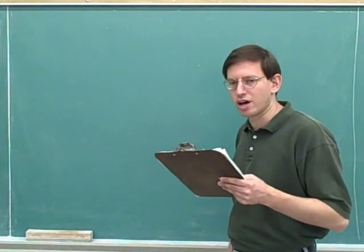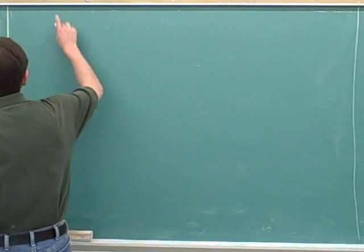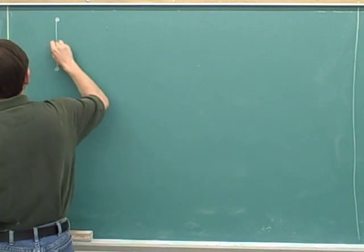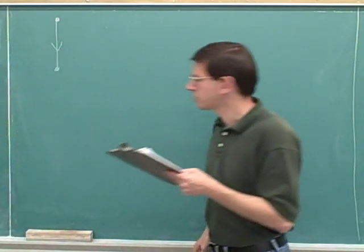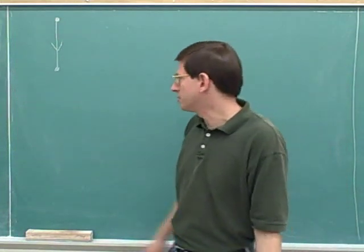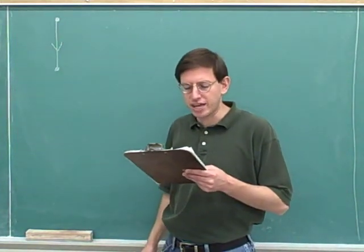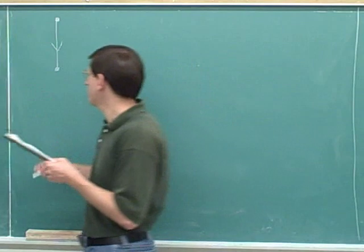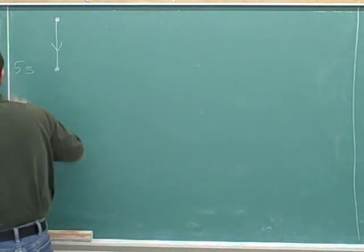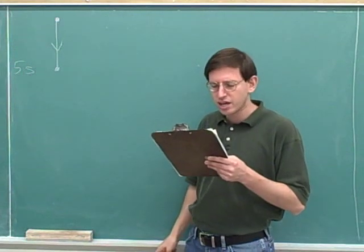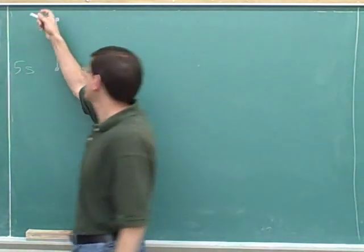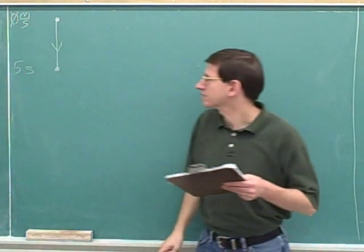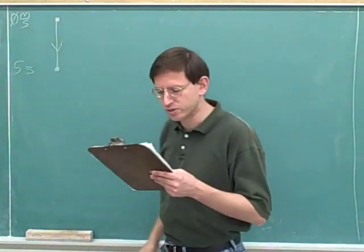Remember that step one is to draw the object's path. So let's draw the path of this object — it's starting over here and then it's moving down. Even when the path is very simple, we should still get into the habit of drawing it, and we should always indicate the initial and the final points. We know the final point happens after five seconds, so let's label that. The object was dropped from rest, which tells us that at the initial point the velocity was zero meters per second.